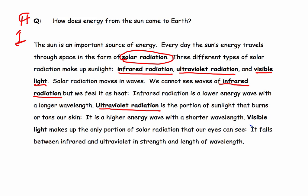And then finally, visible light makes up only the portion of solar radiation that our eyes can see. It falls between infrared and ultraviolet in strength and wavelength.